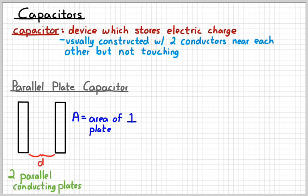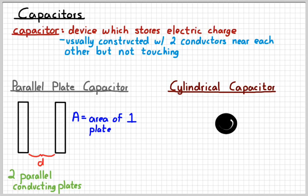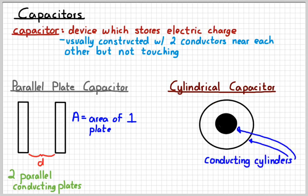And then you can charge up those plates by connecting them to a battery or something like that. Another way to create a capacitor is what's called a cylindrical capacitor. In a cylindrical capacitor, you have two conductors again, but this time they're arranged in a cylinder shape. So one conductor in the middle and then a second conductor surrounding it. Either way, you have two conductors with space in between them.